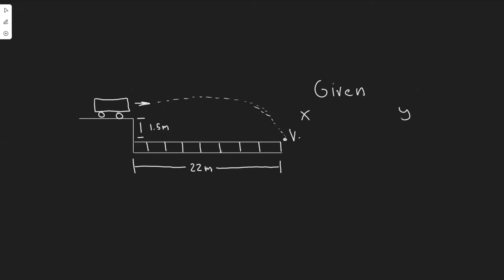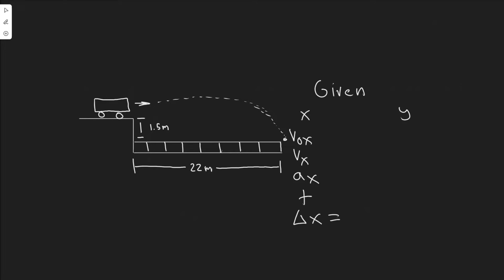Now I'm going to write down all my variables. We have the initial velocity in the x, the final velocity in the x, the acceleration in the x, time, and then the change in x. These are your five variables that you work with when you do kinematics, and I think it's just important to write them out like this because they make it easier to solve.